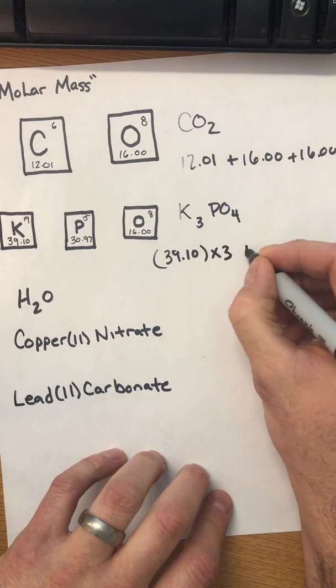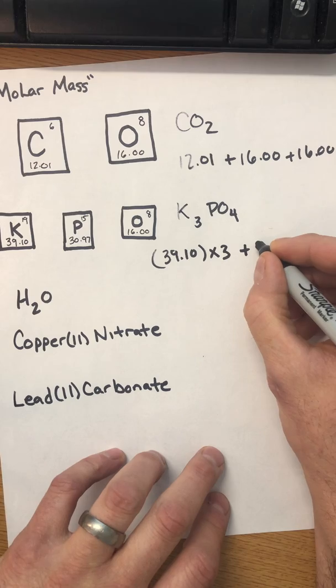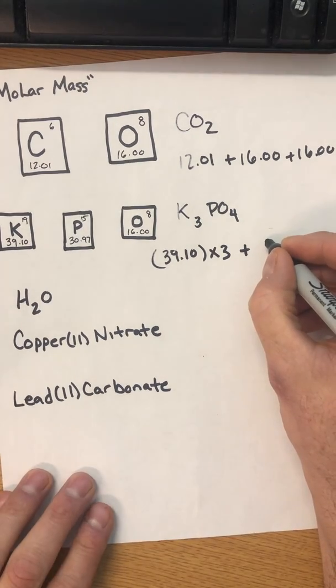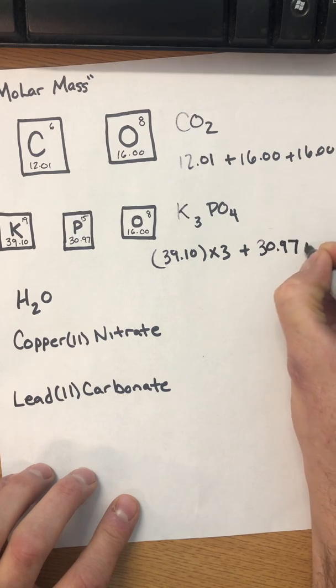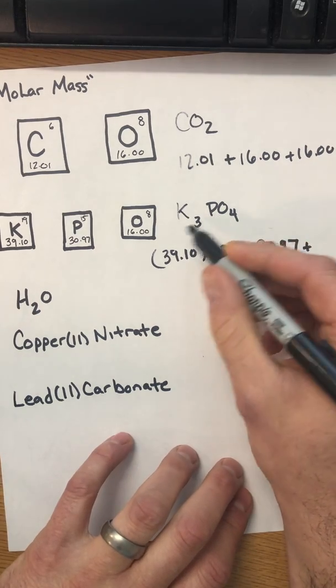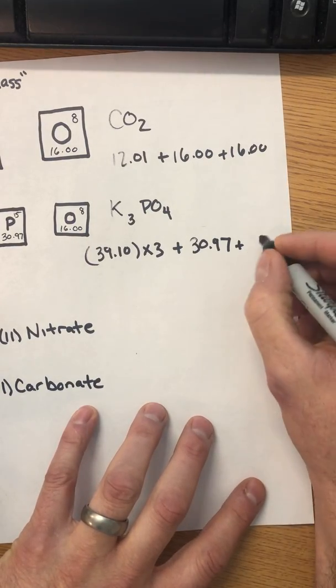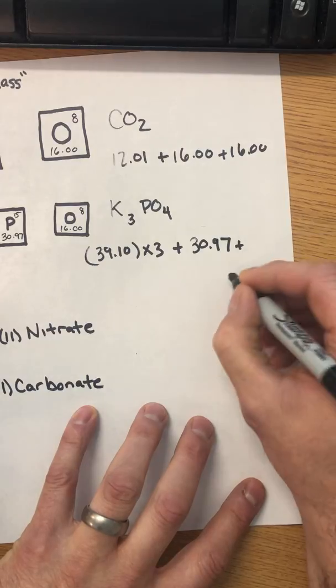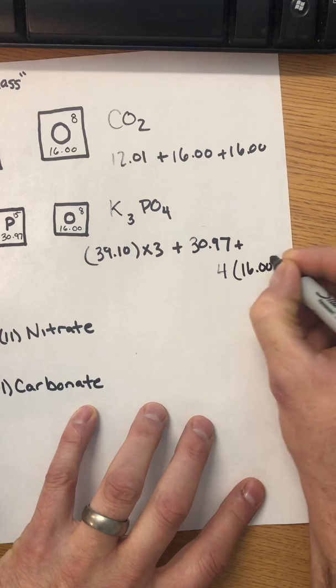And then we're going to add that to the mass of one phosphorus atom, which is, let's see, 30.97. And then we've got four oxygen atoms to take into account here. So I'm just going to multiply the mass of four oxygens, and that is four times 16, right? There we go.